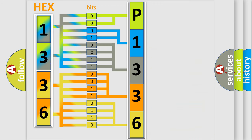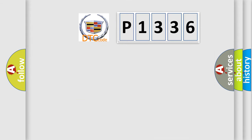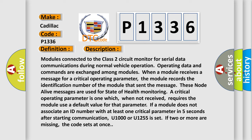We now know in what way the diagnostic tool translates the received information into a more comprehensible format. The number itself does not make sense to us if we cannot assign information about what it actually expresses. So, what does the diagnostic trouble code P1336 interpret specifically for Cadillac car manufacturers? The basic definition is: Class 2 communications malfunction. Here is a short description of this DTC code.